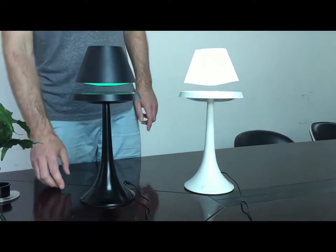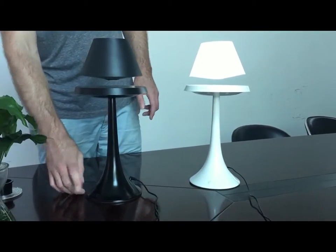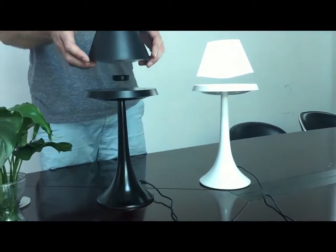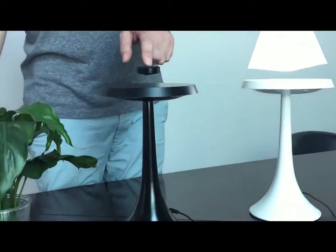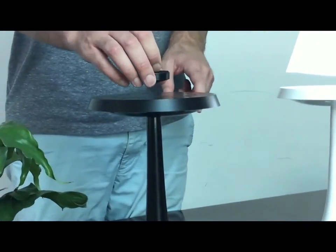I'm going to show you a little bit about how it works. So if I turn this one off, remove the lampshade. We have a floating magnetic disc which the lampshade sits upon.